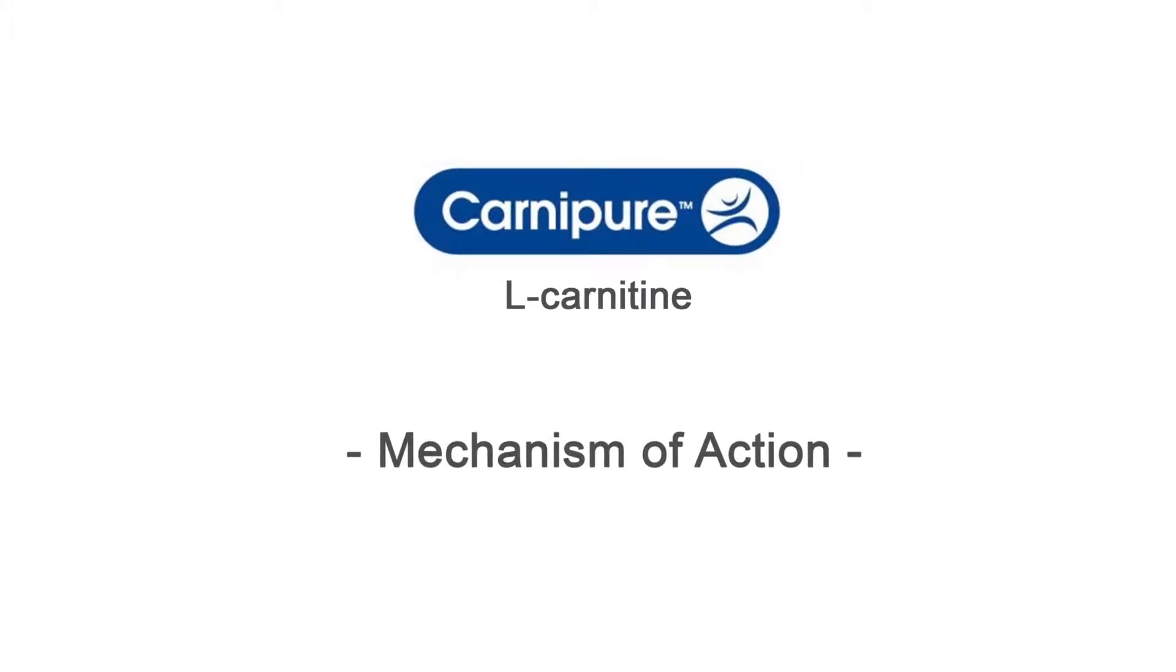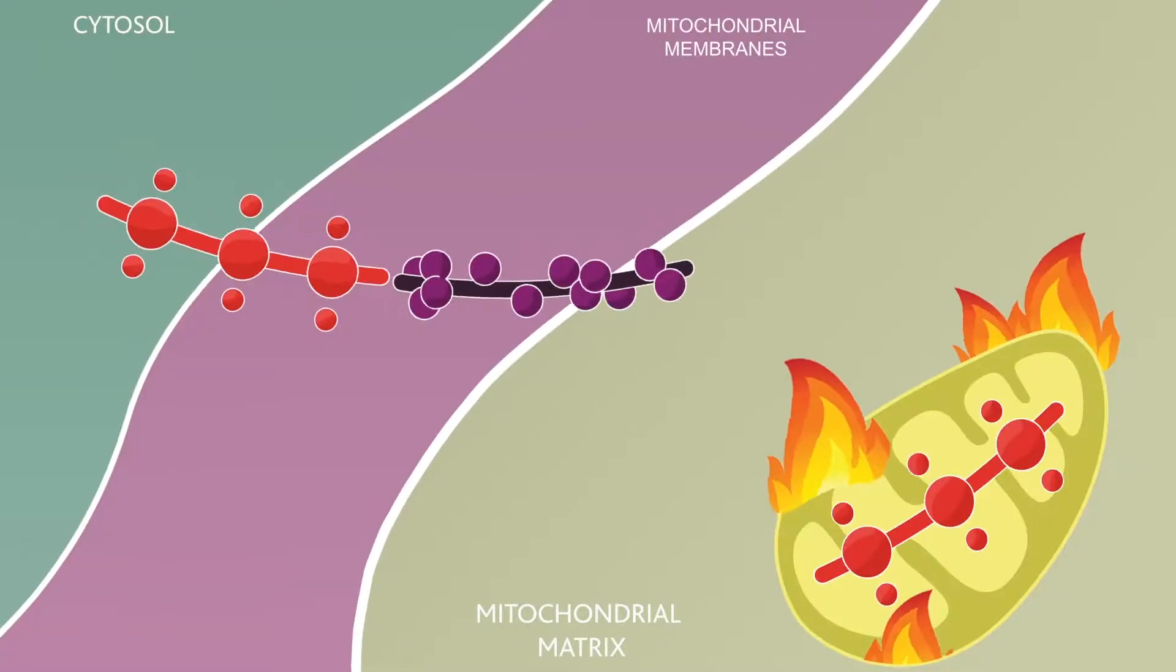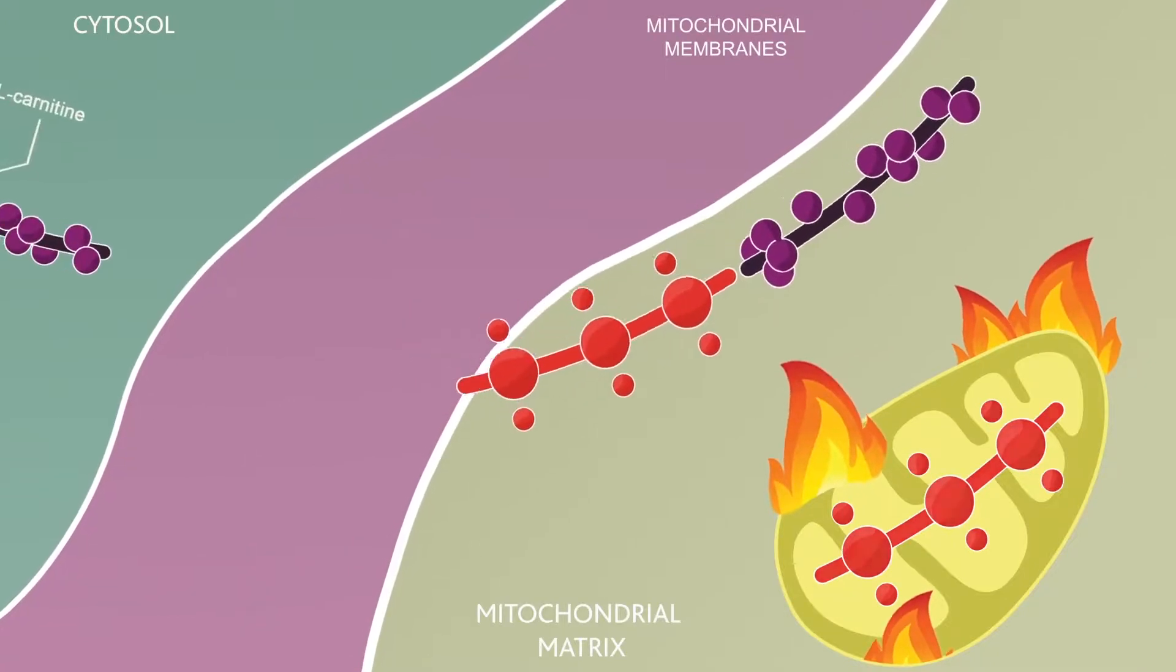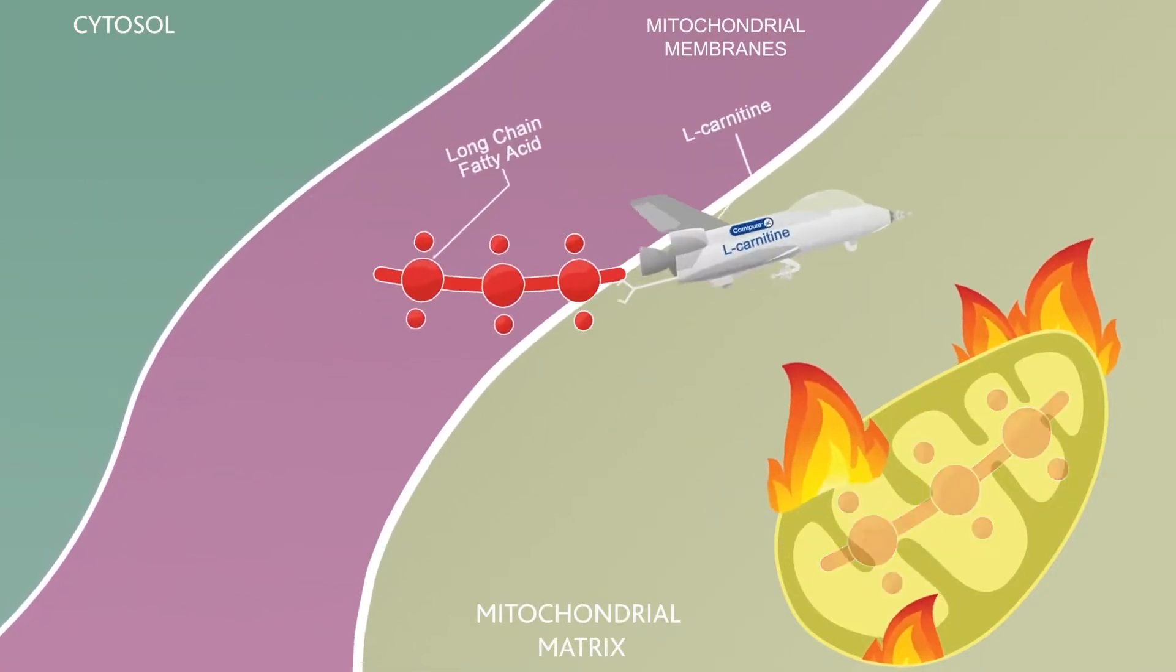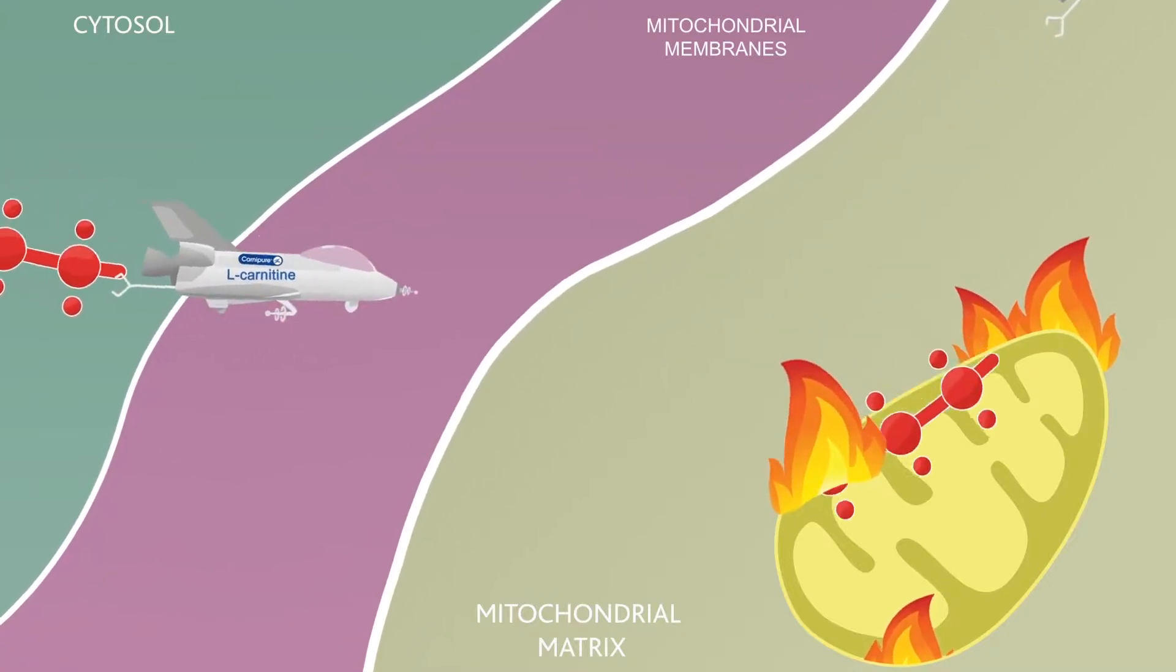Learn more about Carnipur L-Carnitine and its mechanism of action. L-Carnitine is part of a shuttle mechanism that transports long-chain fatty acids across the mitochondrial membrane to be broken down through beta-oxidation.